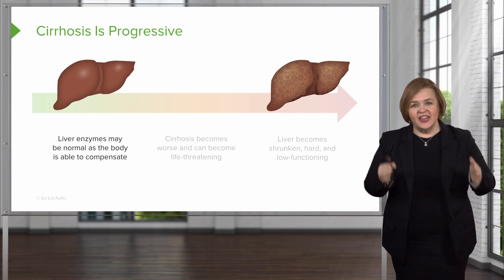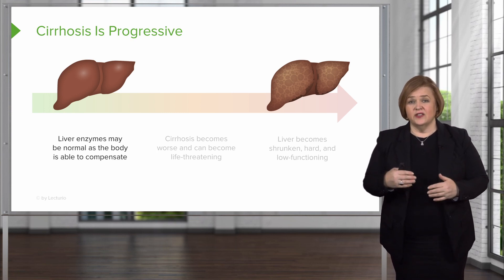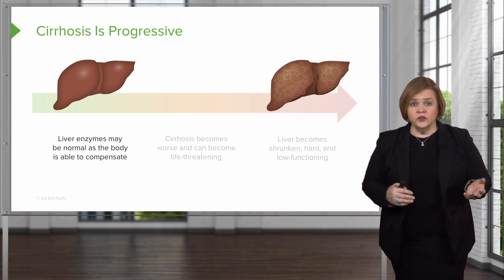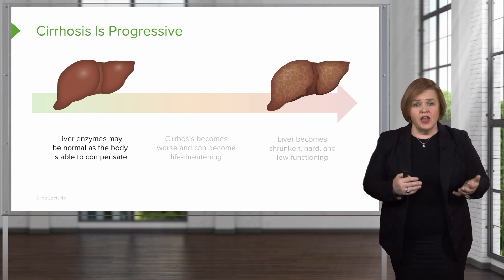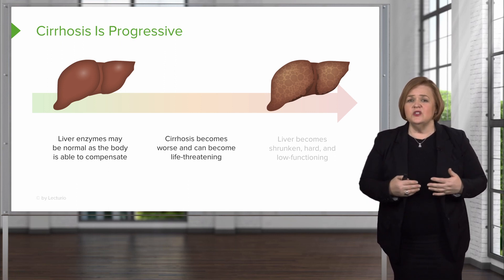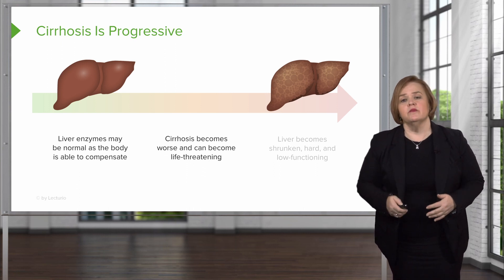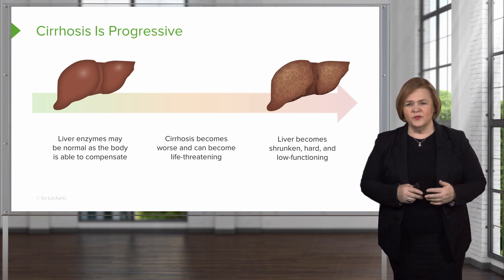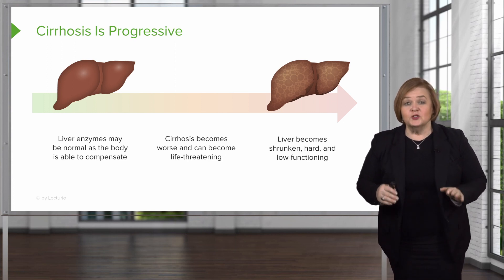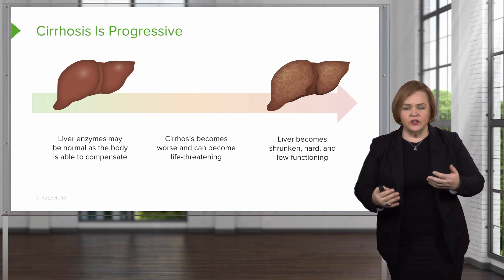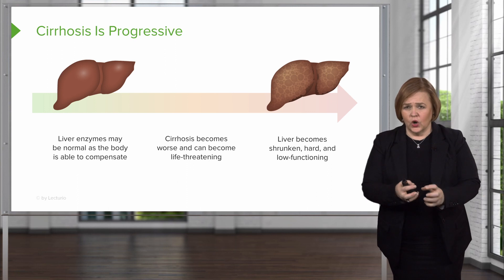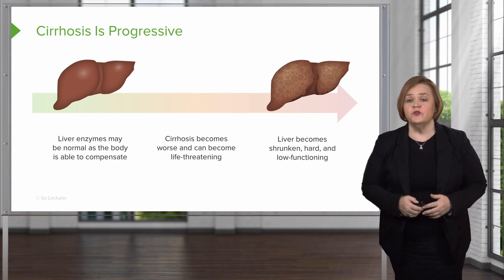So that's a concept we want you to have: the difference between a healthy liver and a liver that's suffered from cirrhosis. Cirrhosis is progressive — it happens over a period of time. Earlier in the disease, the liver enzymes might be normal, so we would have a normal AST or ALT because the body is able to compensate. But if the liver continues to be injured, cirrhosis becomes worse and can even become life-threatening. Late in the disease, that liver is shrunken, it's hard, and it's very low functioning. Remember, it's a super filter — blood has to easily flow through those lobules and all those structures. A really cirrhotic liver has regenerated in a less organized way, and the structures are all changed and distorted, which is why it makes it so difficult for blood to flow through.